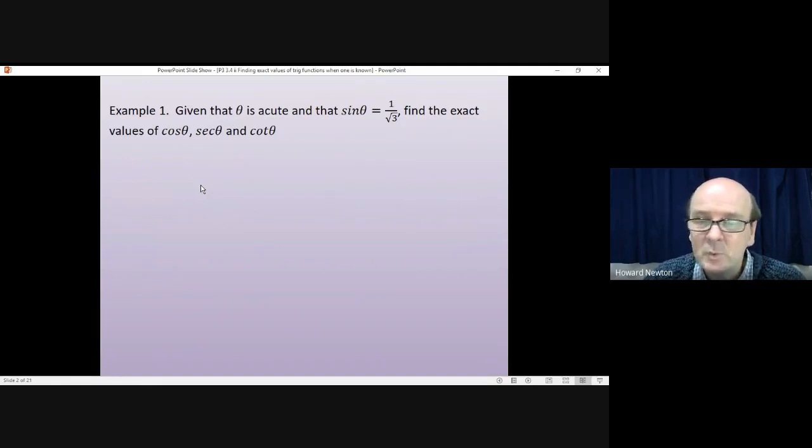The easiest way to do this is to quickly sketch your right angle triangle, put in the 1, put in the root 3, and move forwards from there. I'll let you have a go yourself first. Pause the video. Come back when you're ready.